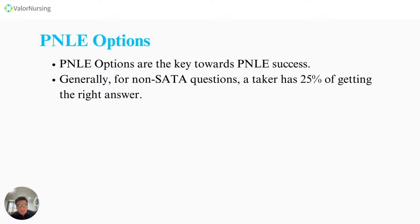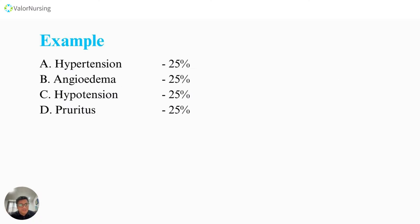For a non-SATA question, a taker always has a 25% chance of getting the right answer. My students have been telling me it's very hard because they totally don't know the answers. I've always told them: you are never at zero — you are given four options to answer. For example, I will be laying down only the options here, no question, for us to better understand everything.